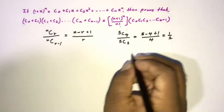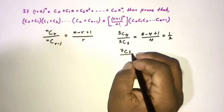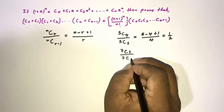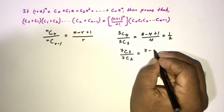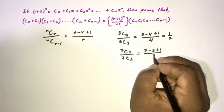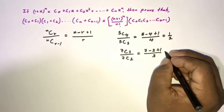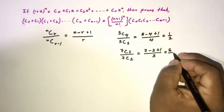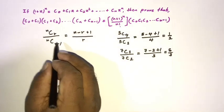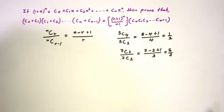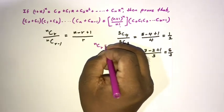Let's take another example: 7 choose 3 over 7 choose 2. Applying the formula: (7 - 3 + 1) / 3 = (7 + 1 - 3) / 3 = 5 / 3. Now let's move to the main question.